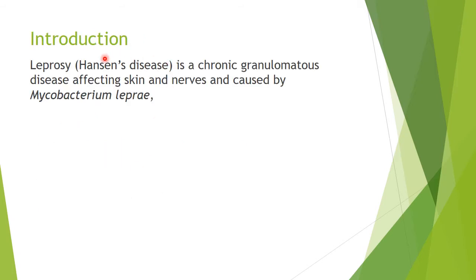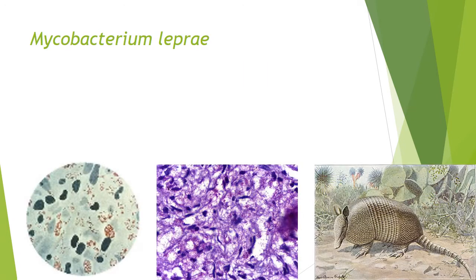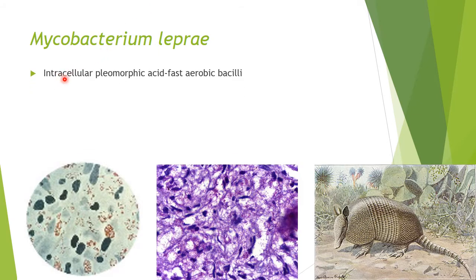Leprosy, or Hansen's disease, is a chronic granulomatous disease affecting skin and nerves, caused by Mycobacterium leprae. It is an obligate intracellular bacteria — it cannot survive outside the cell. It is pleomorphic, acid-fast, and an aerobic bacillus without proper anaerobic mechanisms.